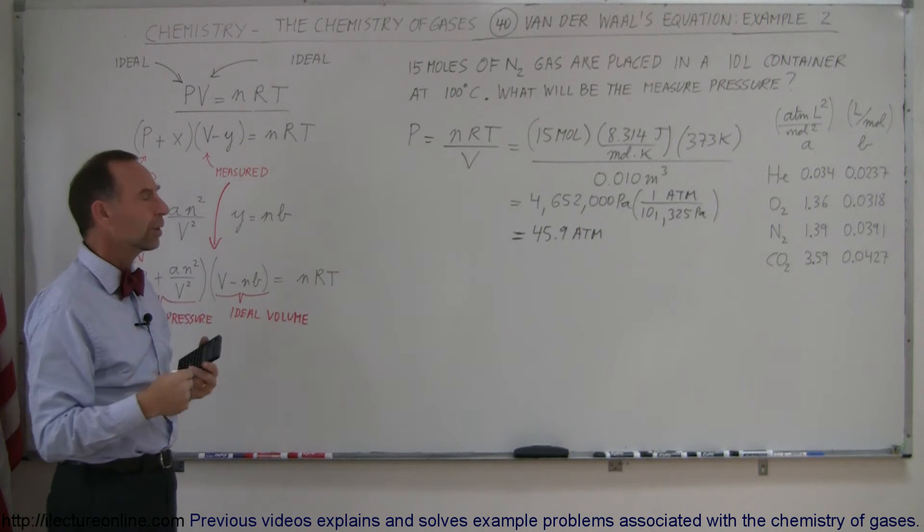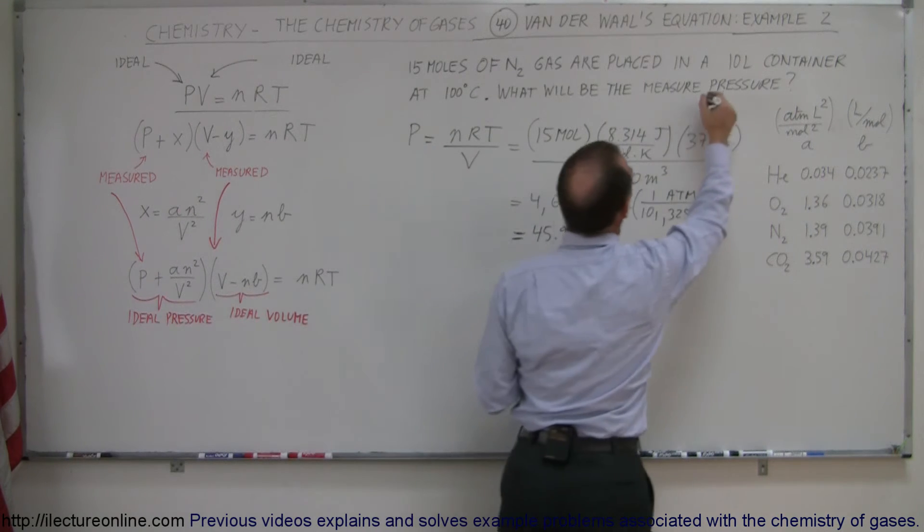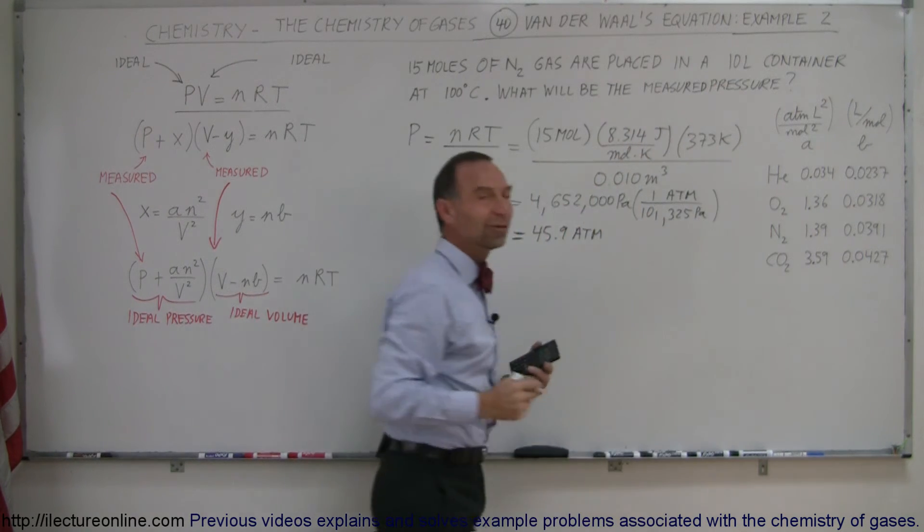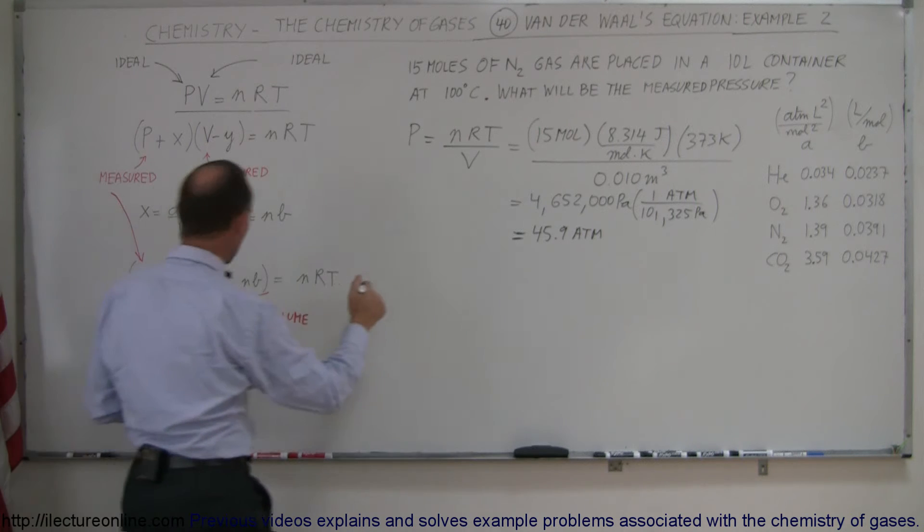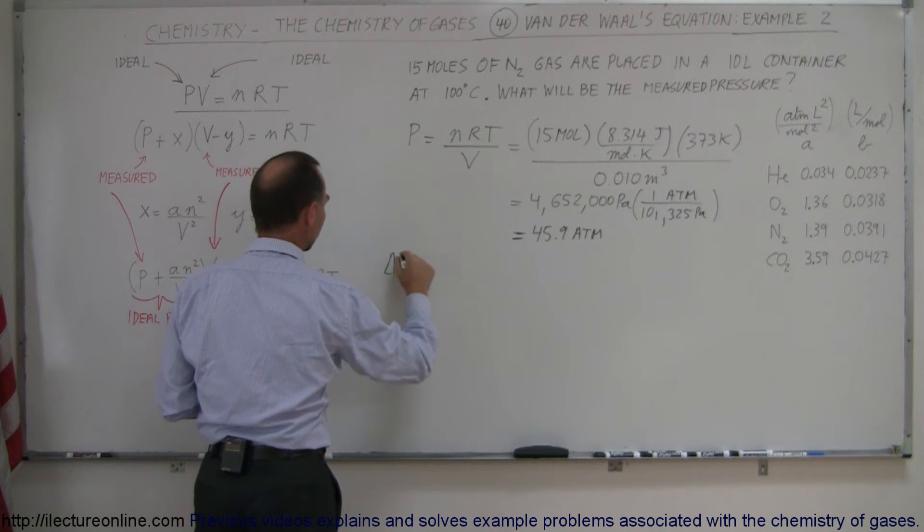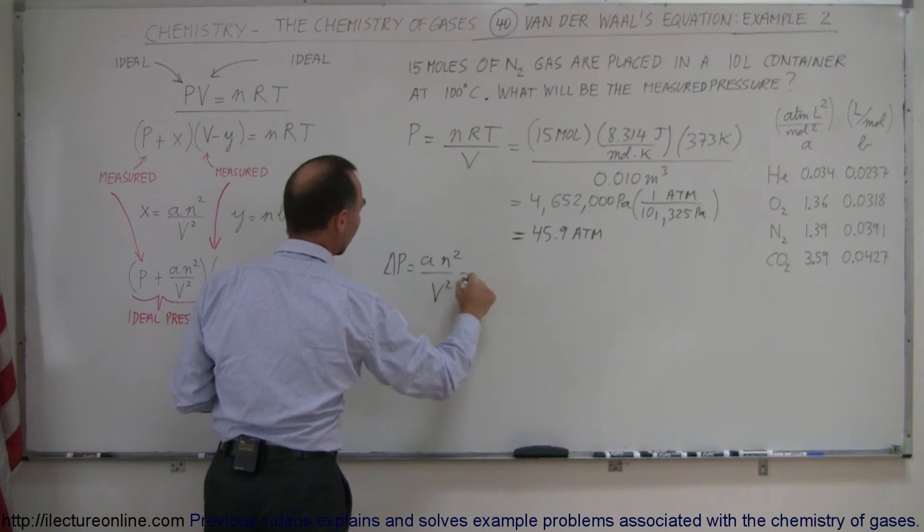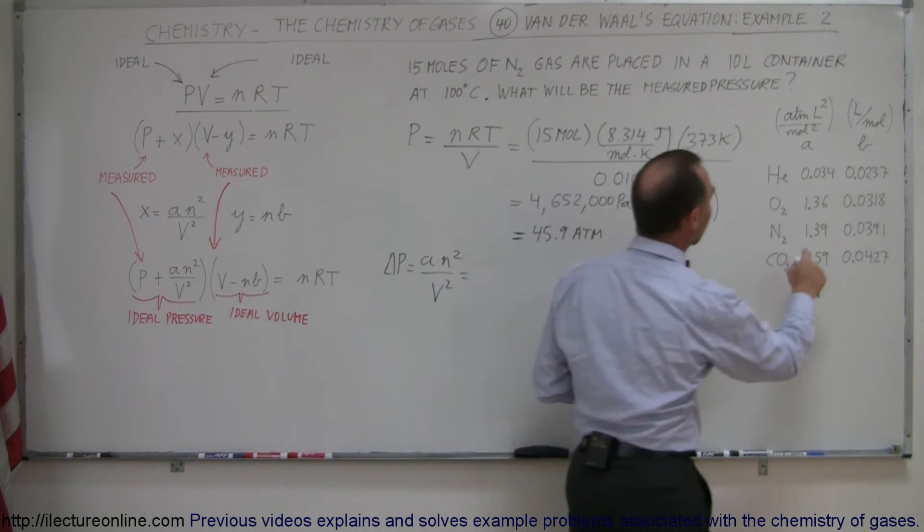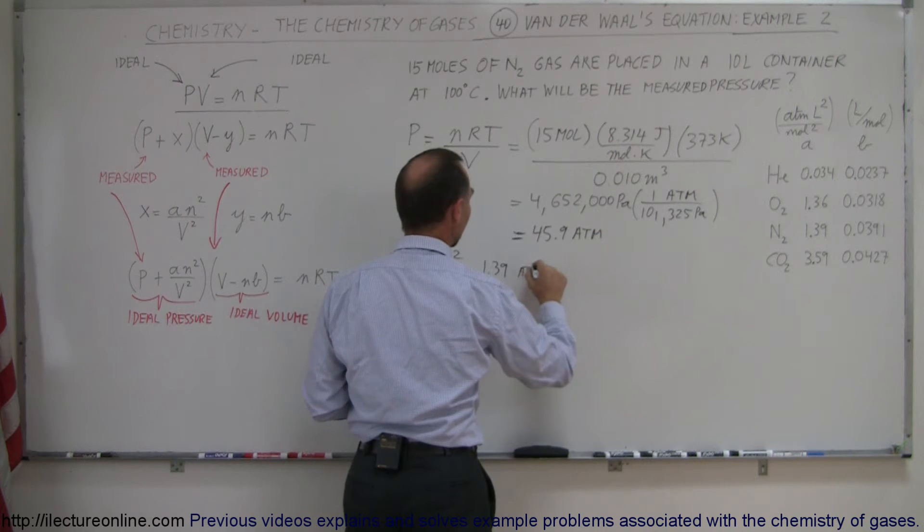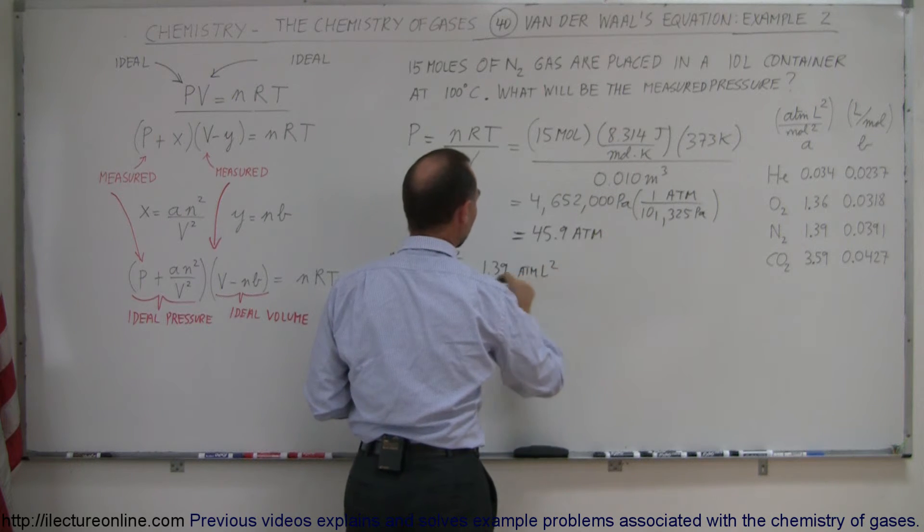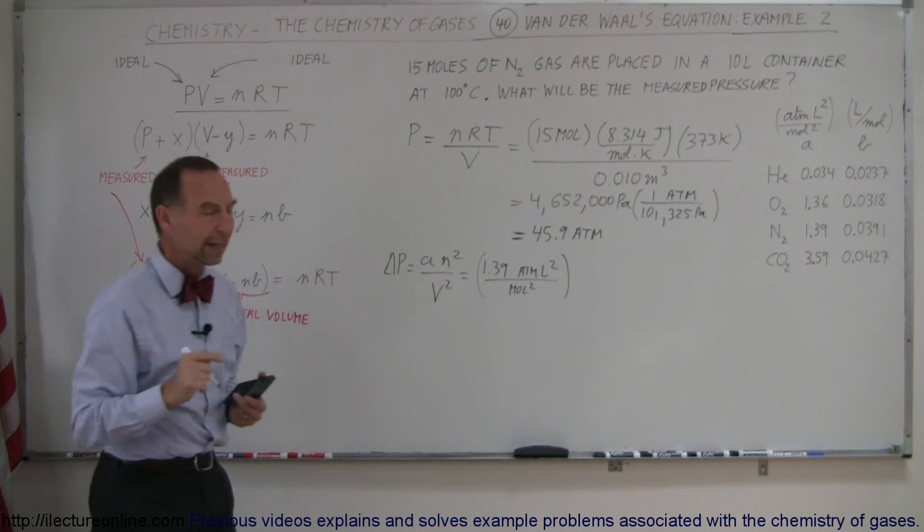So what was the adjustment factor? What kind of factor do we have? What will be the measured pressure? So we're going to figure out the adjustment factor here, the change in the pressure. So the change in the pressure is equal to An squared over V squared. So for nitrogen gas, the A is 1.39. So it would be 1.39, and the units are atmospheres liters squared divided by the moles squared. So that's the factor associated with nitrogen gas.